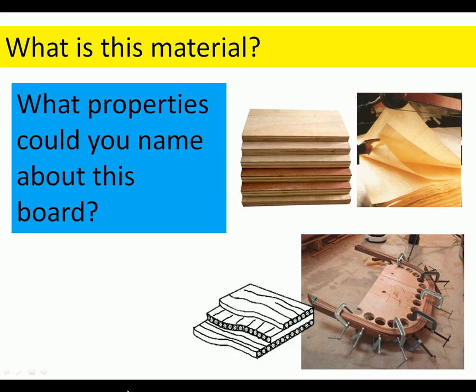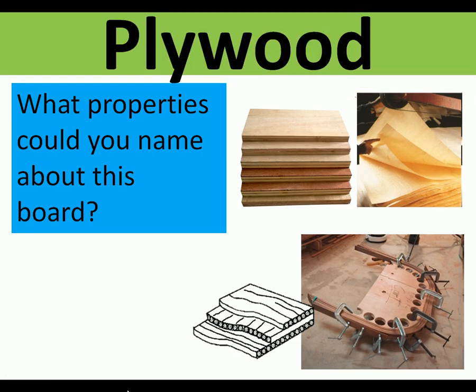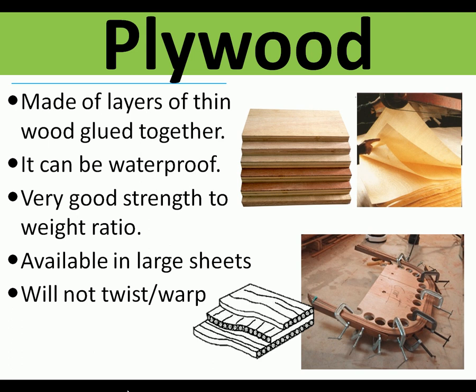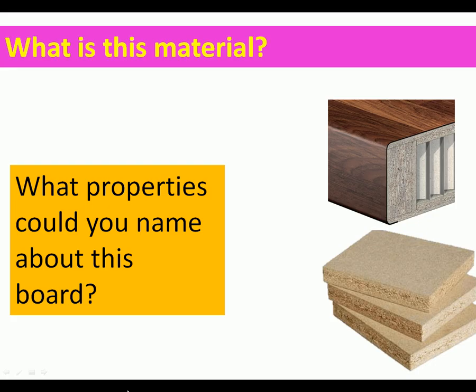Plywood is made of thin layers of wood glued together. It's generally waterproof if you get waterproof grade, it's very strong, and has an excellent strength-to-weight ratio — they even make aeroplanes out of plywood. It's available in large sheets and generally doesn't twist or warp.